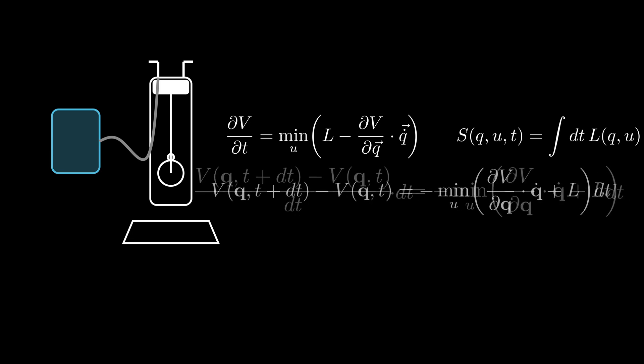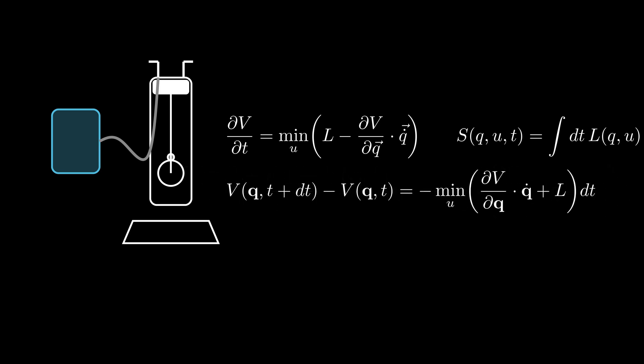Before I move forward, let me mention that this equation has a Markovian nature because the state of the value function at the next time step depends only on its current state and not on its history. Now, let's move the value function at the next time step to the right and multiply both sides by a minus one.